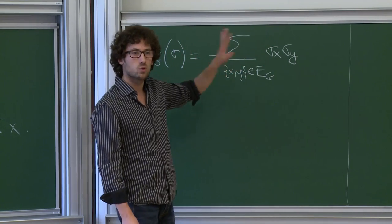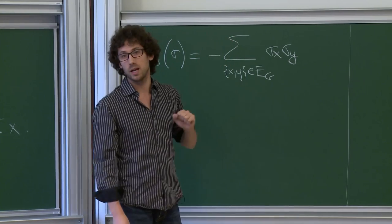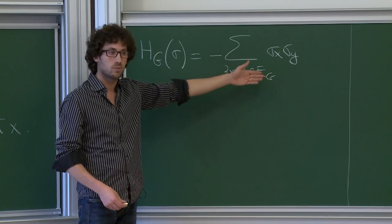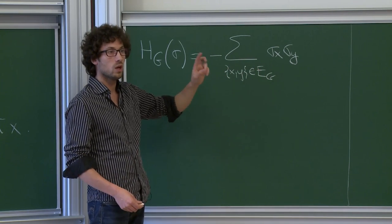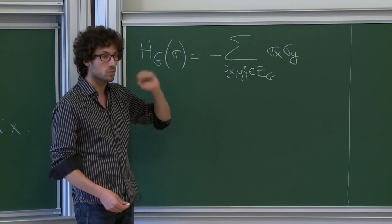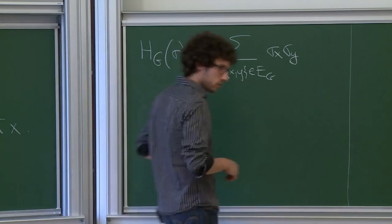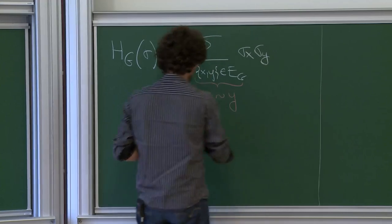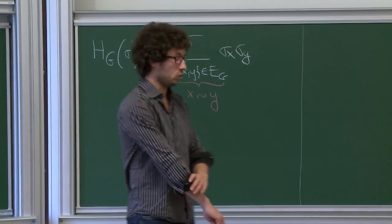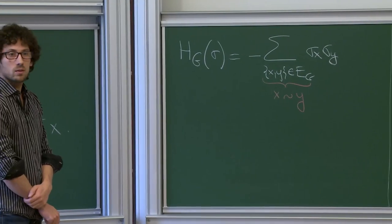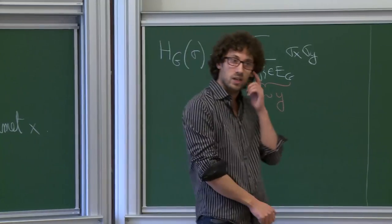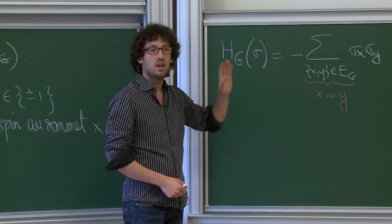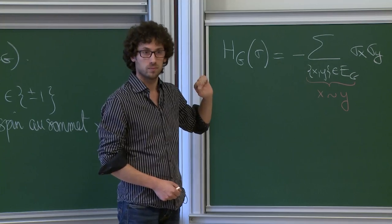À une constante près, l'énergie est deux fois le nombre de voisins non alignés. Les configurations d'énergie minimale — les ground states — sont tout +1 ou tout −1. Dans la suite, on notera x ∼ y pour dire que x et y sont voisins dans le graphe. Je me restreins au modèle d'Ising ferromagnétique nearest-neighbor, ce qui revient à poser J(x,y) = 1 si x et y sont voisins, 0 sinon.